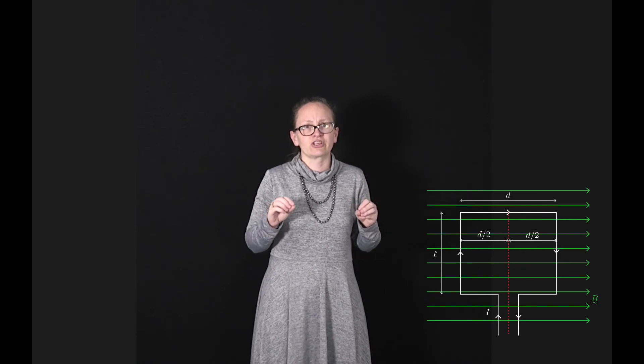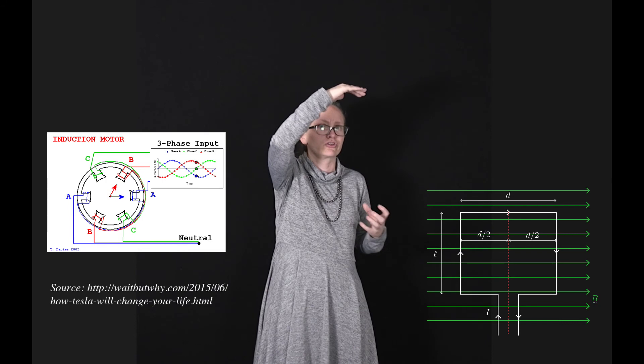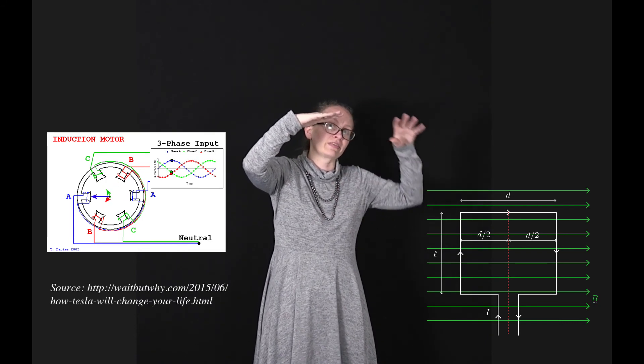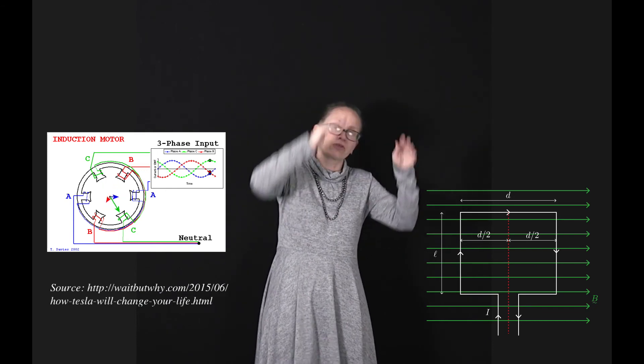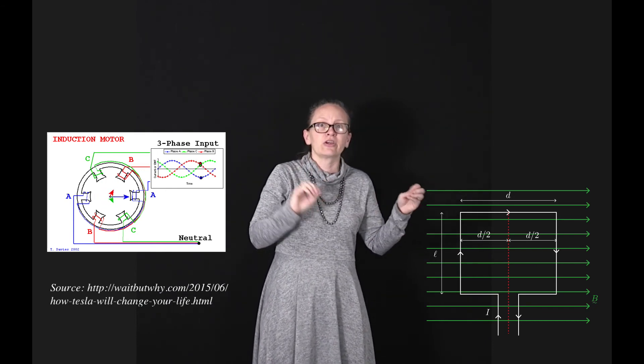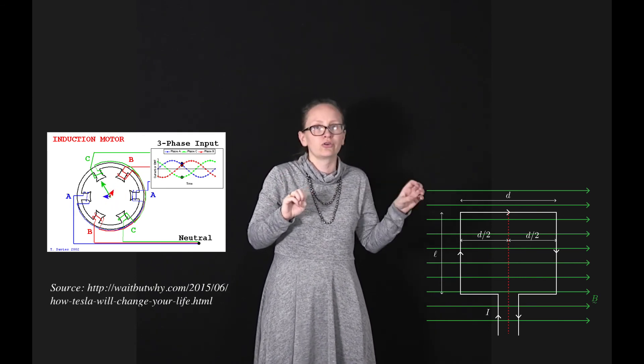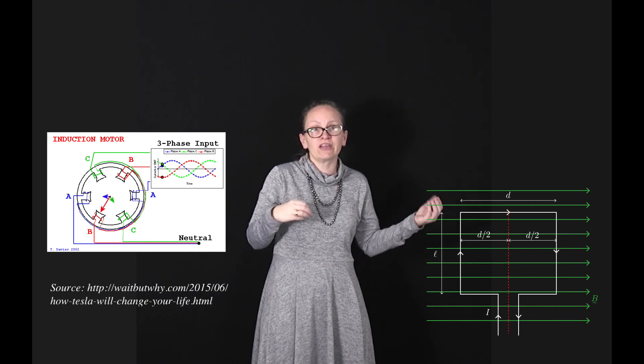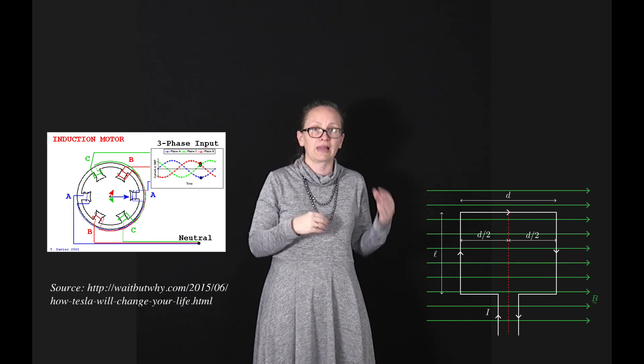Another common modification is to use three-phase power. If we use three-phase power to create the magnetic field, we can create a magnetic field that rotates around as the coil rotates. This means we can keep the normal to the plane of the loop aligned with the magnetic field, which increases the torque applied.